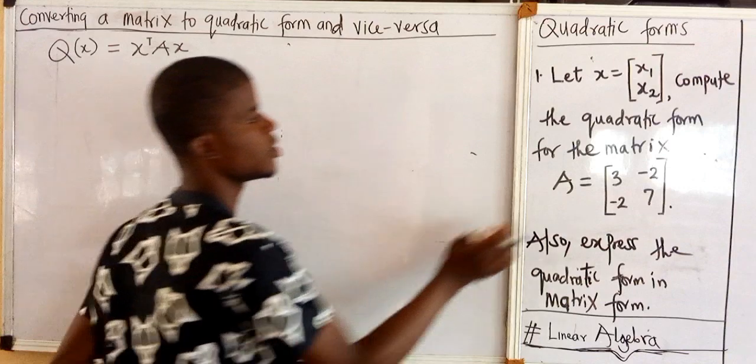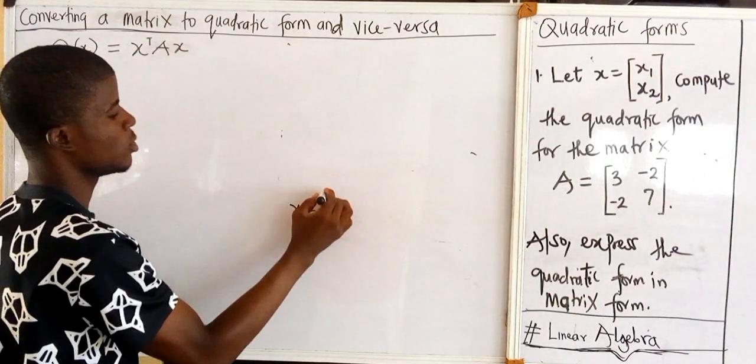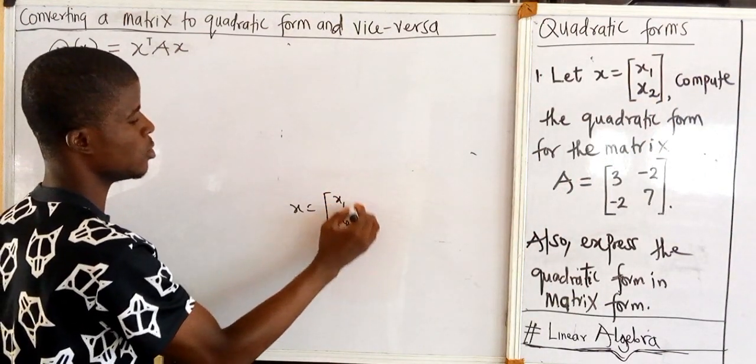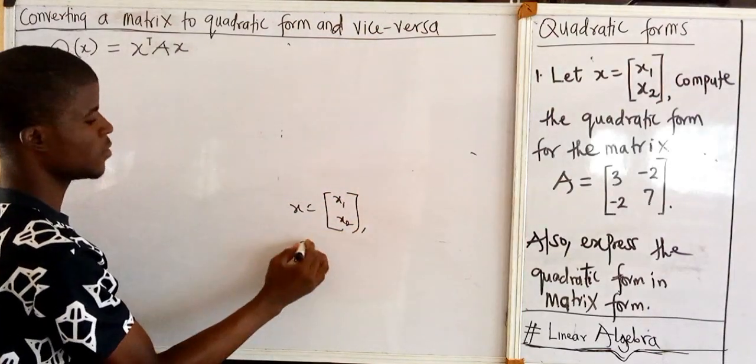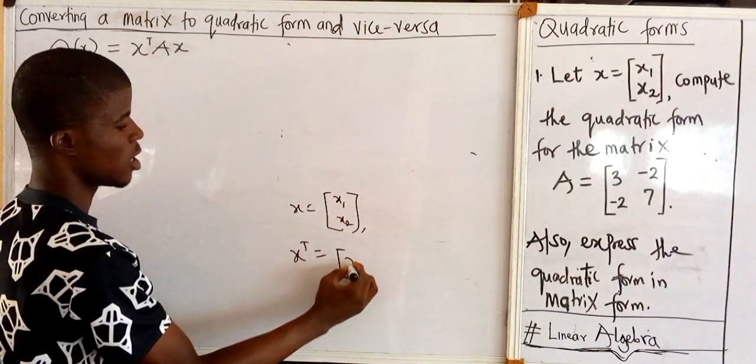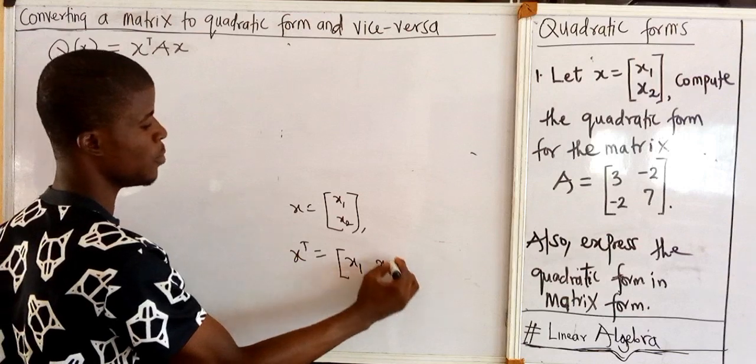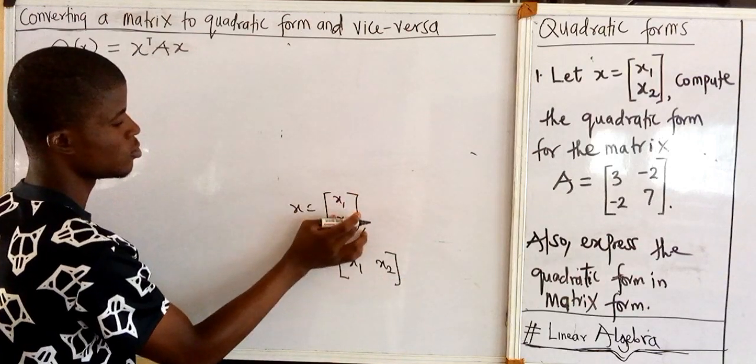Matrix x is of this form: x is equal to x1, x2. So the transpose of this matrix is x1, x2. That is, the columns will become the row.